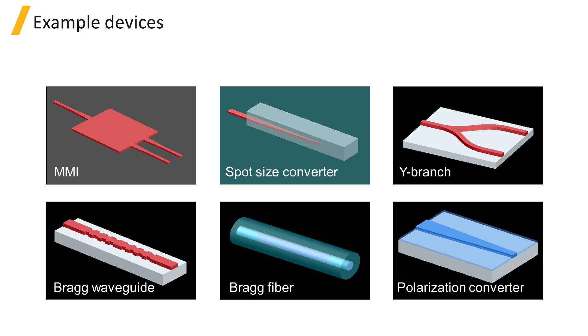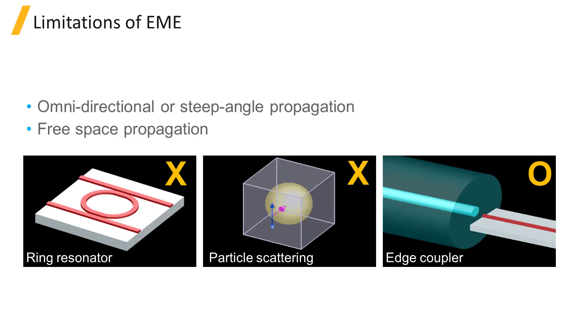EME is not suitable for simulating devices such as ring resonators, which exhibit steep angle or omnidirectional propagation. It's also generally not suited for simulating propagation in free space, for example Mie particle scattering, where FDTD is more suitable.